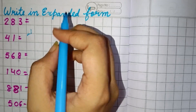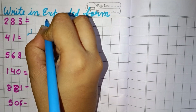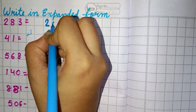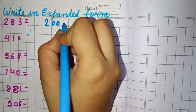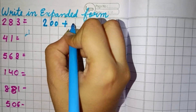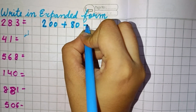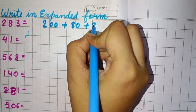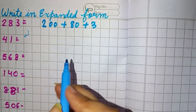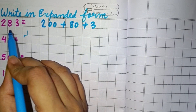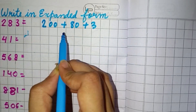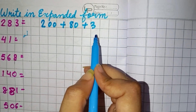So we will write here 200 plus 80 plus 3. In this way we will write these numbers in expanded form.